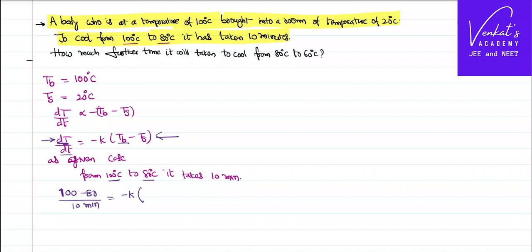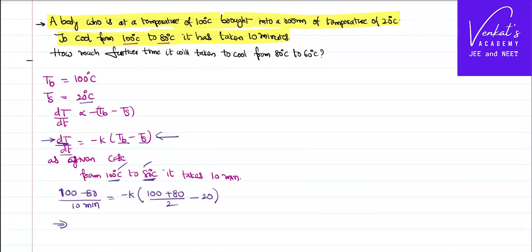Since the body temperature goes from 100 to 80, we take the average: (100 + 80) / 2 = 90 degrees, minus the surroundings temperature of 20. Simplifying: 20/10 = -K(90 - 20). This is Equation 1.